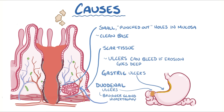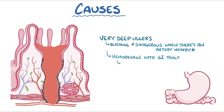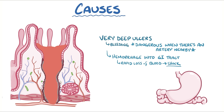Very deep ulcers can erode into underlying blood vessels and cause bleeding, which is extremely dangerous when there's a nearby artery, because hemorrhage into the gastrointestinal tract can happen and this rapid loss of blood can ultimately lead to shock. Two well-known dangerous spots are a gastric ulcer on the lesser curvature of the stomach eroding into the left gastric artery, and a duodenal ulcer on the posterior wall of the duodenum eroding into the gastroduodenal artery.